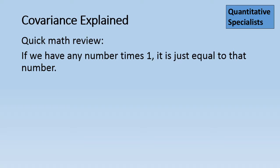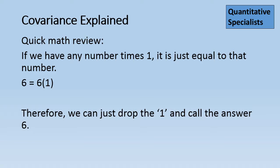As a quick math review, if we have any number times 1, it is just equal to that number. Right? So 6 is equal to 6 times 1. We'll just drop the 1 and call the answer 6. Now I know this is very basic, but bear with me. We're going to relate this to correlation and covariance in just a minute.